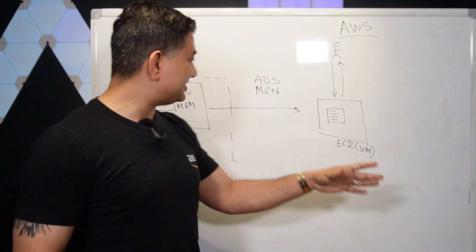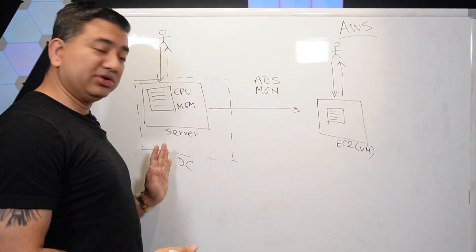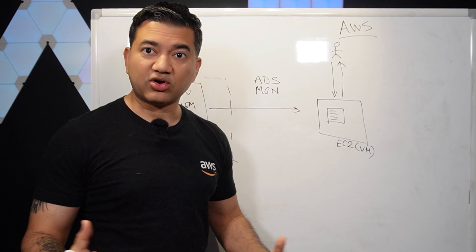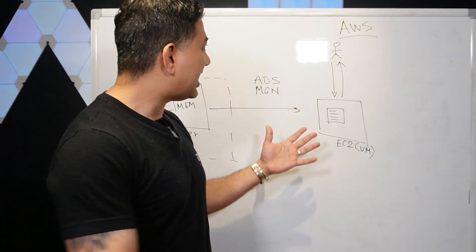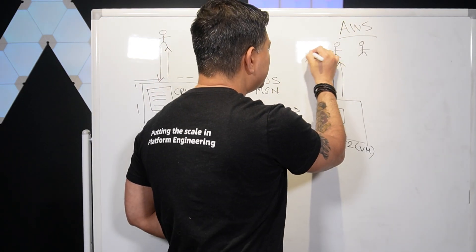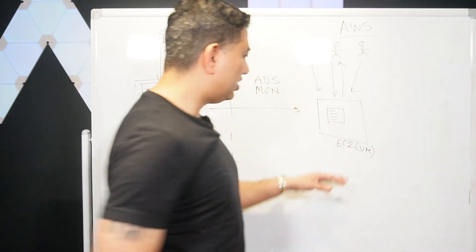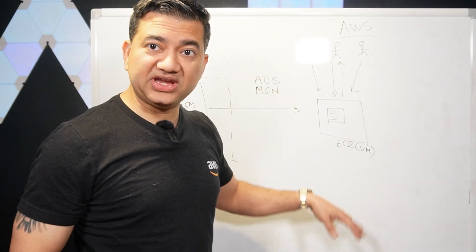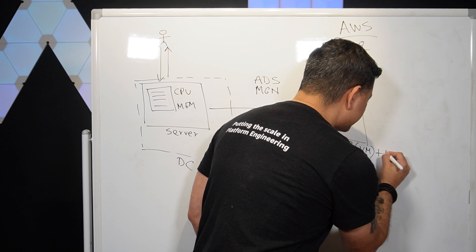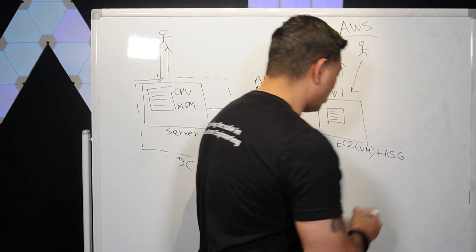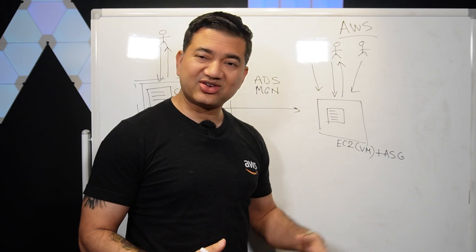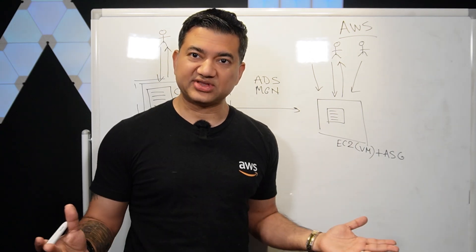One thing not available in a data center but available on the cloud is auto-scaling. As more users start using your application, your virtual machine needs to scale, so you also need to study Auto Scaling Groups. But EC2 and Auto Scaling Group is old news now.